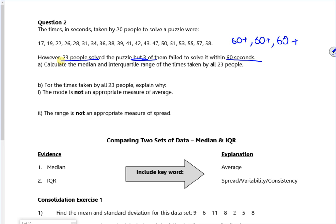So it says for the times taken by all 23 people, explain why the mode is not the most appropriate. So if you look at those numbers in order, it would mean that your mode is a 60 plus.